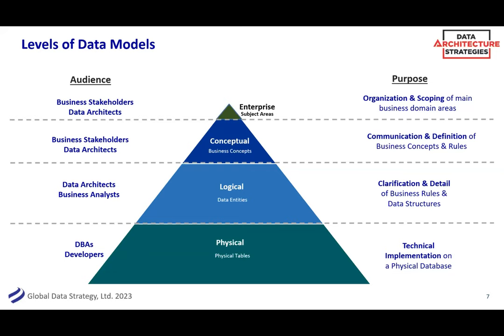Part of the discussion today is the different levels in a data model. They are all valuable and all have business value. We might start with the business-level data models like conceptual and logical, but physical data models also show efficiency, cost savings, time savings, and quality improvements. Walking through this, if it's new to you: there are different levels and types of data models. A conceptual data model — also called an enterprise model or business data model — shows really the business view. It's called conceptual not because it's high in the clouds, but because it talks about the concepts of the business.